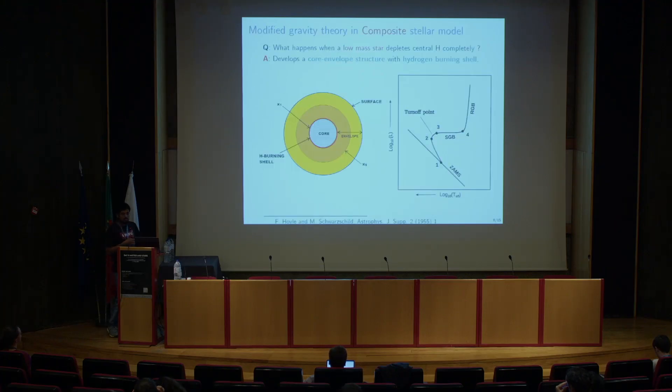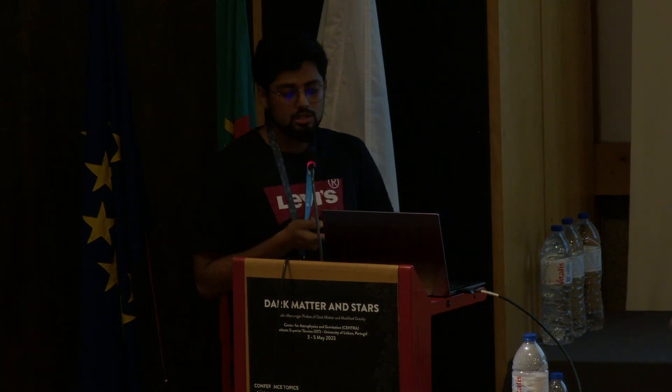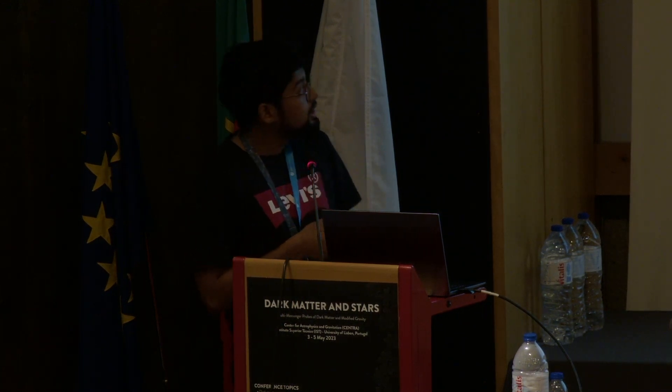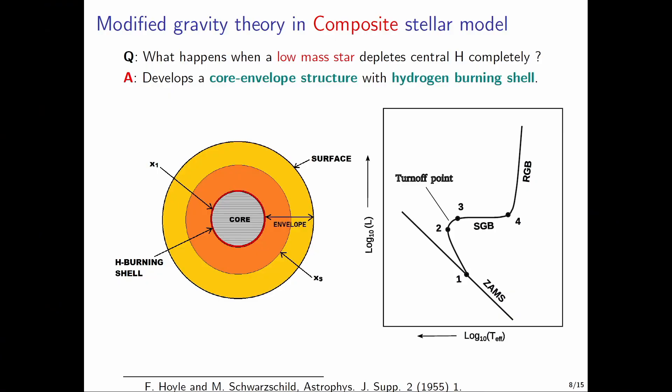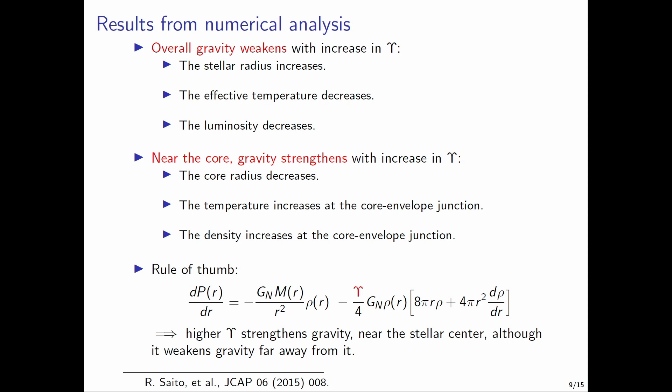We also consider modified gravity in composite stellar structure models having distinctive core envelope structure with an intermediate hydrogen burning shell. Such a model is relevant for low mass stars in their turn off point which corresponds to the shell hydrogen burning phase. From our numerical analysis we obtain that with an increase in the modified gravity parameter the overall gravity weakens, therefore the stellar radius increases with a decrease in the luminosity and the effective temperature. However we also see that near the core with an increase in epsilon the gravity strengthens. Therefore the core radius decreases with an increase in the temperature and the pressure at the core envelope junction.